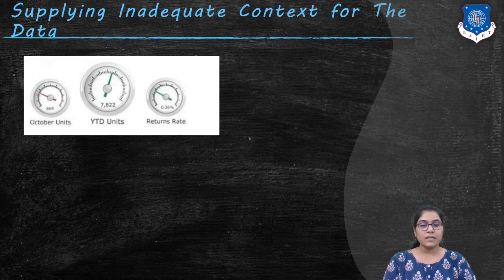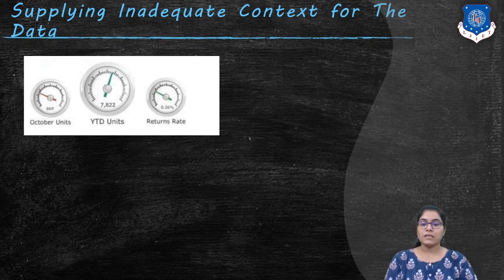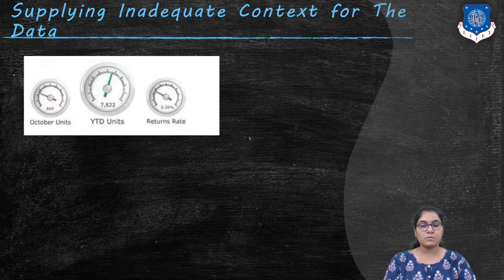They need a good supporting cast to get the message across. To state that quarter-to-date sales total $73,600 and 502 without any context means little. Compared to what? Is this good or bad? How good or bad? Are we on track? Is this better than before? The right context for the key measures makes the difference between numbers that just sit there on the screen and those that enlighten and inspire action.